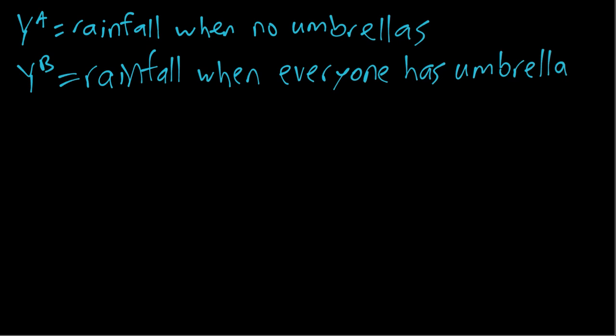These are a couple examples about the difference between statistical relationships and causal relationships. In the first example, imagine Y^A is the amount of rain when nobody is carrying an umbrella outside, and Y^B is the amount of rain when everyone outside is carrying an umbrella.